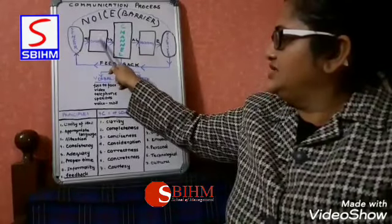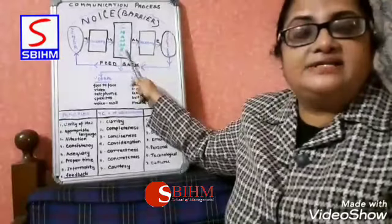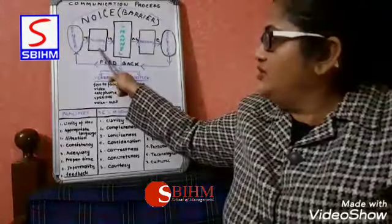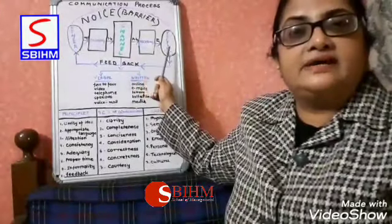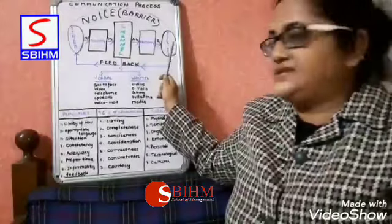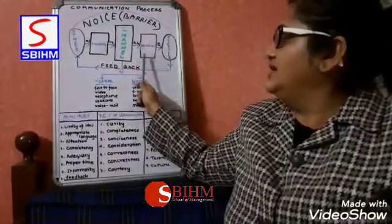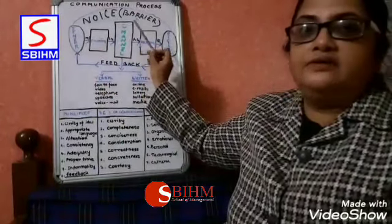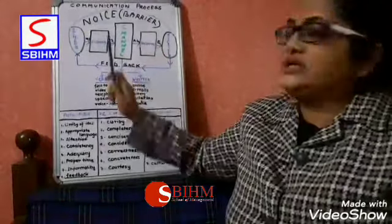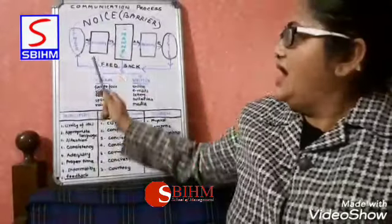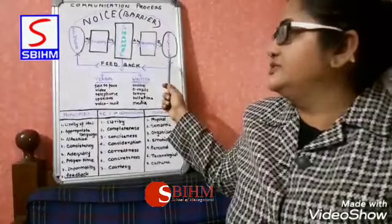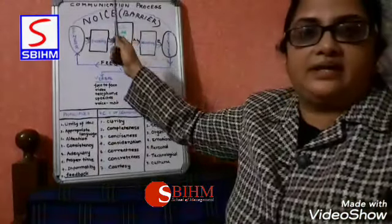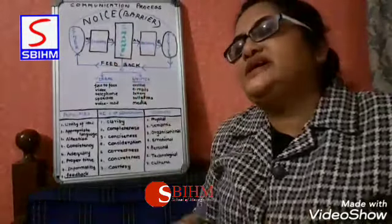After encoding the message, there is a channel — the medium through which the message is sent to the receiver. The encoded message has to be decoded by the receiver, who then sends feedback to the sender. The channel can be different mediums; for example, during a telephone call, there can be a problem in transmission — that is a noise barrier where the receiver is not able to get the full information.